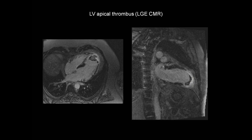The thrombus can be seen much more clearly on these images than on the previous cine images. That's because thrombus is avascular, which makes it dark — it doesn't take up any gadolinium contrast. So on these two images, we can see this dark, irregular structure at the apex, surrounded by the infarcted myocardium, which is very bright because of the presence of late gadolinium enhancement. Late gadolinium enhancement CMR is the most sensitive technique for identifying the presence of left ventricular thrombus.